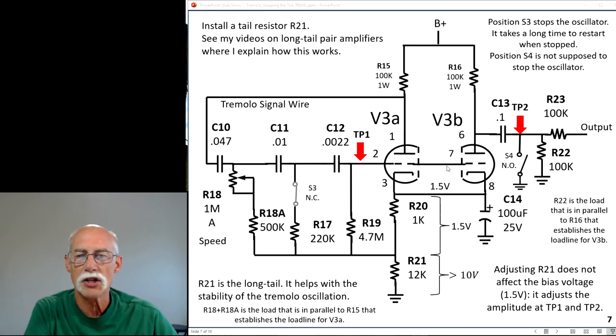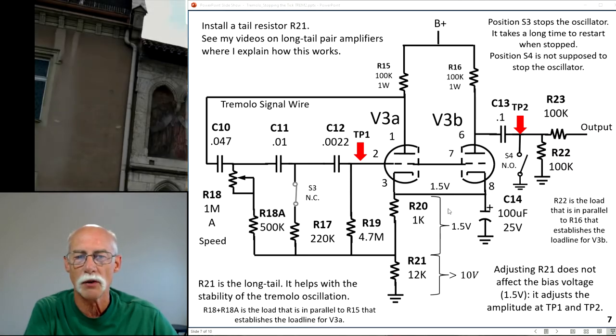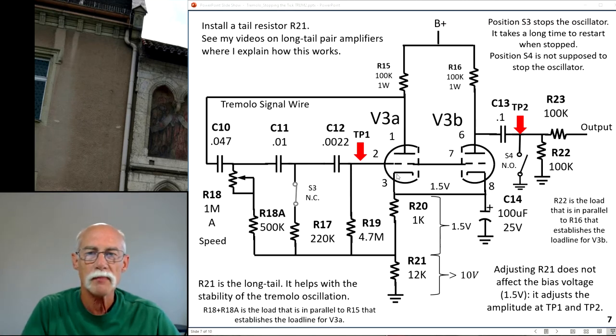Adjusting R21 doesn't change the bias voltage—it adjusts the amplitude of TP1 and TP2.